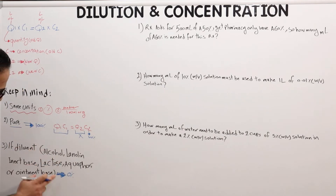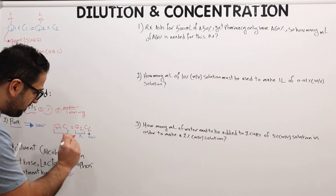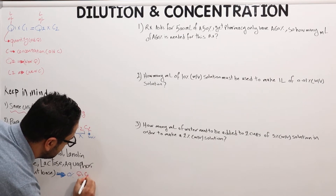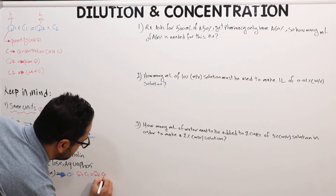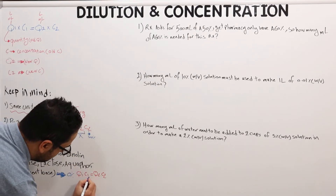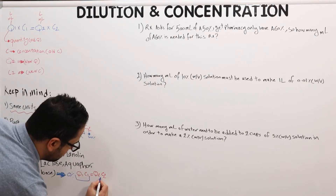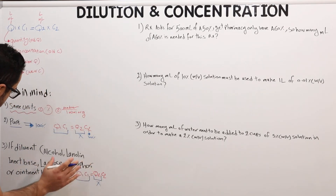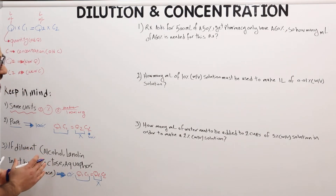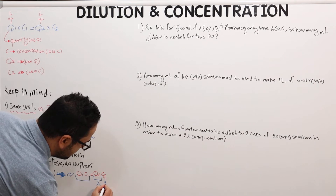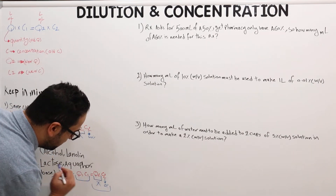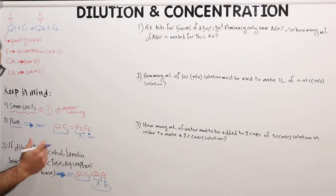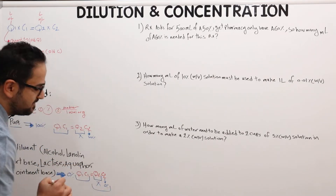Using the same formula Q1·C1 = Q2·C2, if Q1 and C1 are given and Q2 is the unknown, but the ingredient is a diluent, then C2 is zero percent — making the entire right side zero. Therefore, whatever Q1 and C1 are given in the question, Q1·C1 becomes your answer, because C2 is zero.